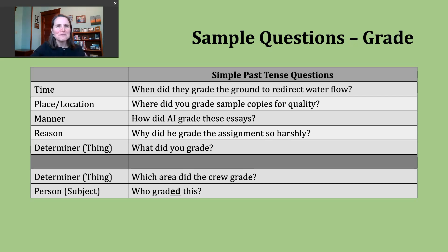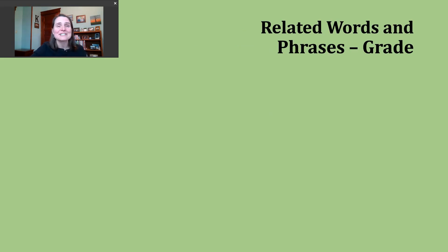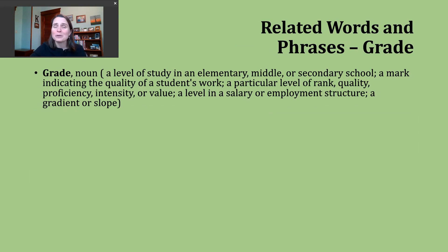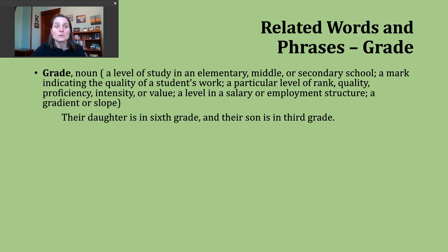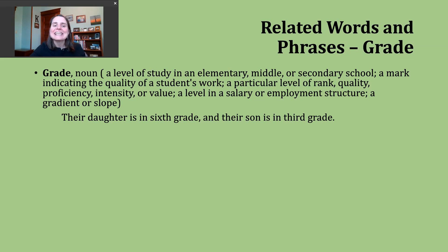Now let's talk about some words and phrases related to our verb grade. The first word is just the noun form — the noun grade has the exact same spelling and pronunciation as our verb and also has a number of different meanings. One way we use the noun grade is to talk about a level of study, most commonly in elementary, middle, or secondary schools. An example: 'Their daughter is in sixth grade and their son is in third grade.' It's very common to see ordinal numbers used before this noun.